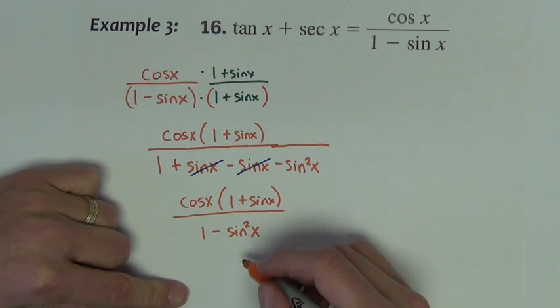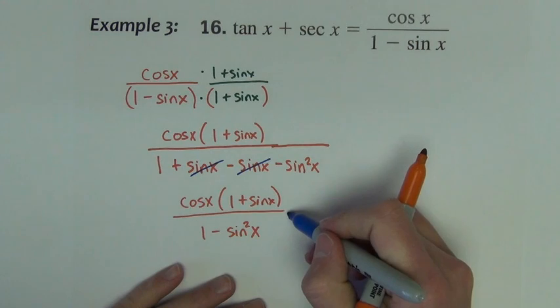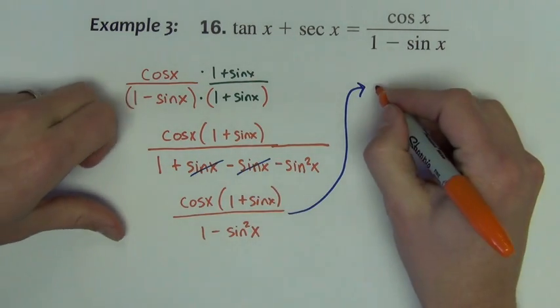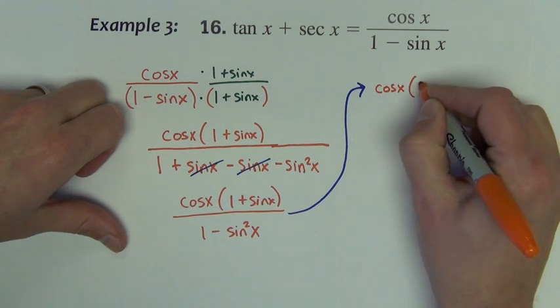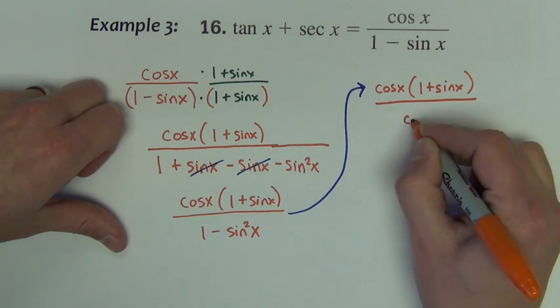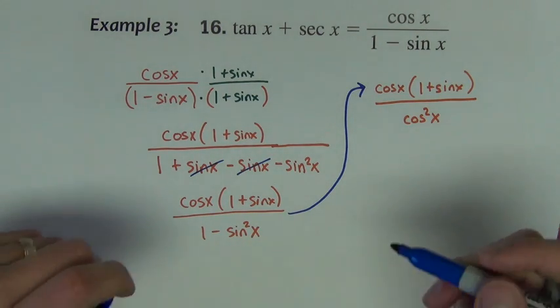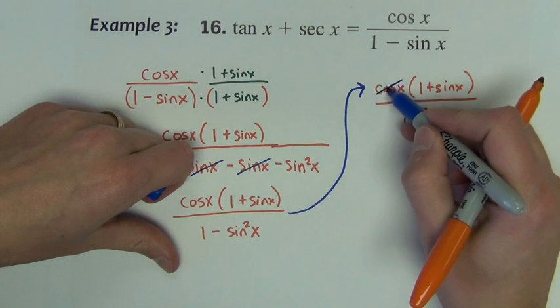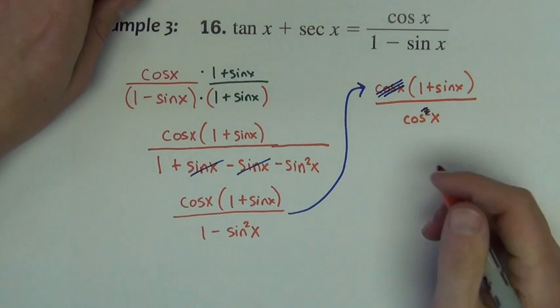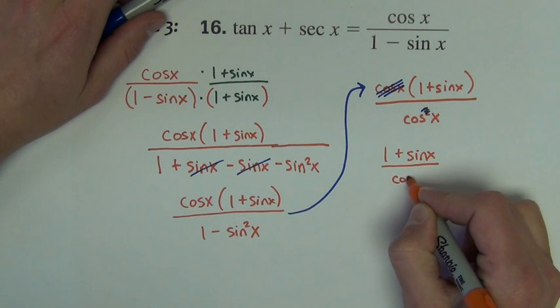So I have now cosine x times 1 plus sine x over cosine squared x. We now have an opportunity to reduce this fraction. This cosine can take away one of these cosines, leaving us with 1 plus sine x divided by cosine x.